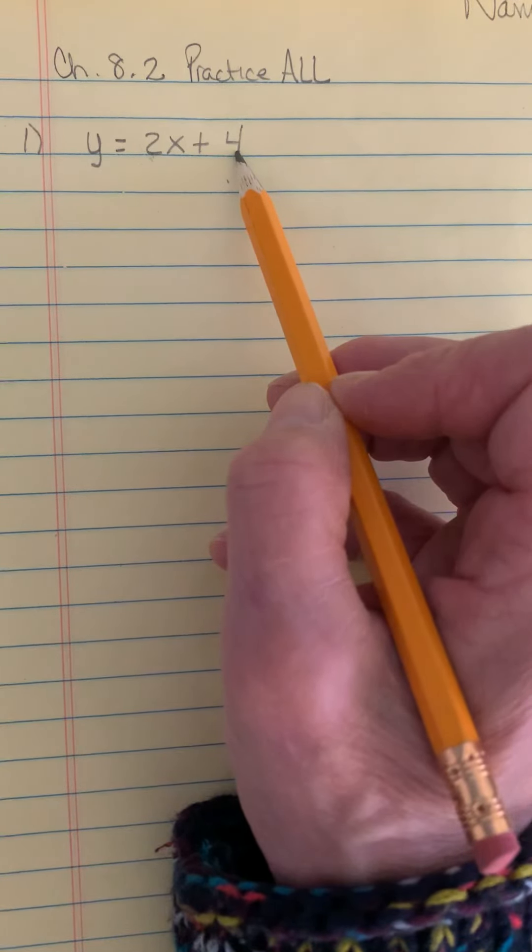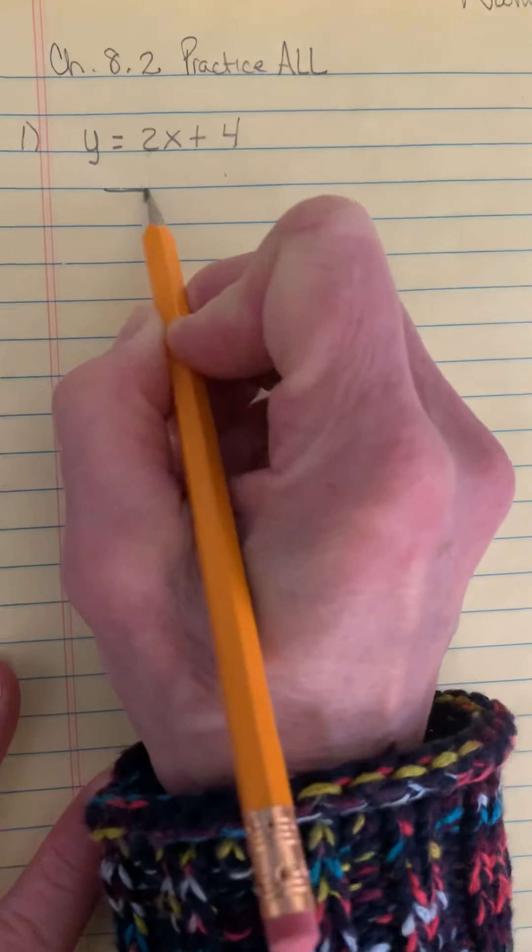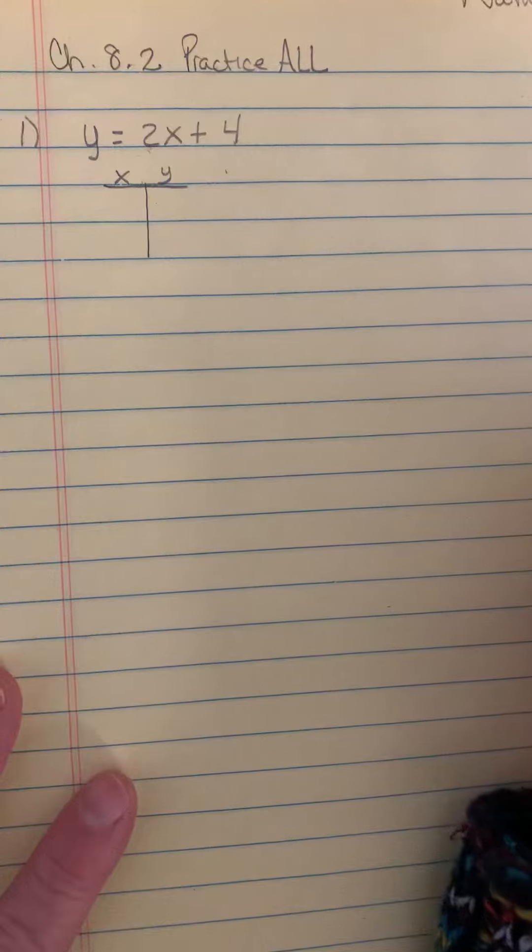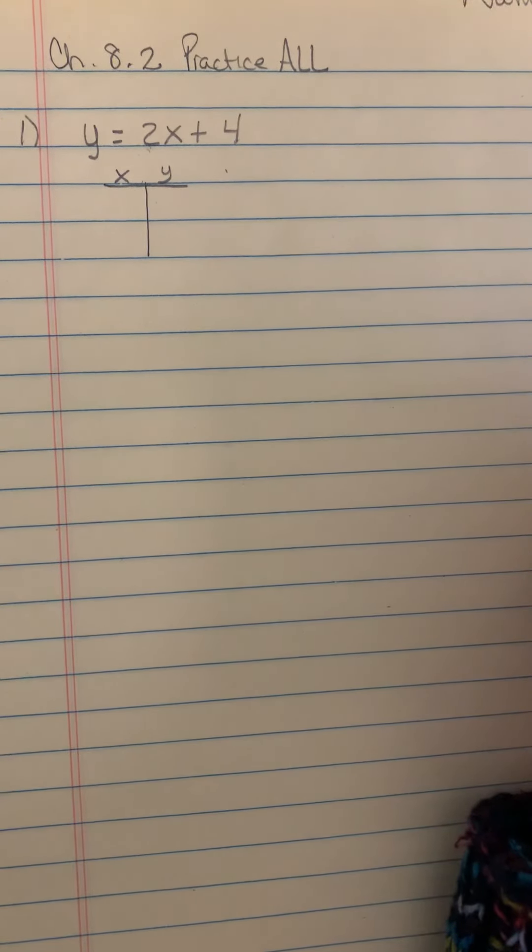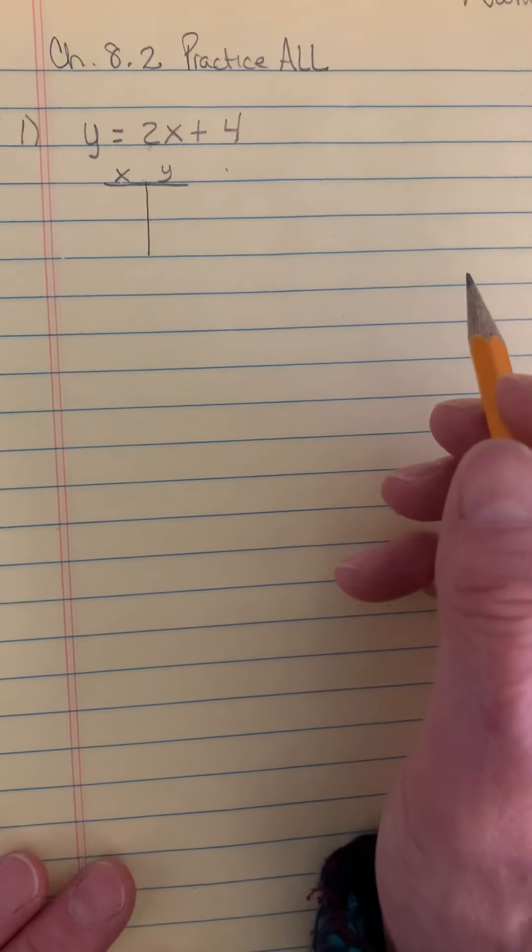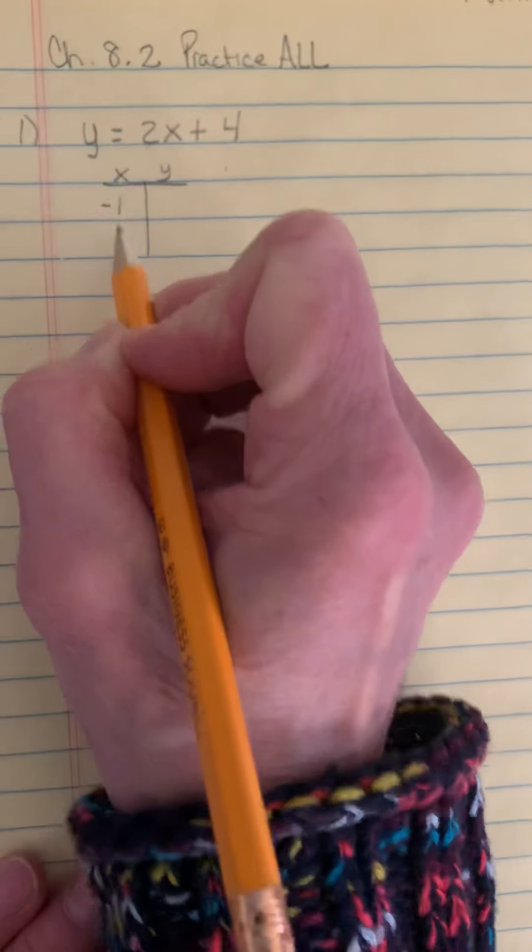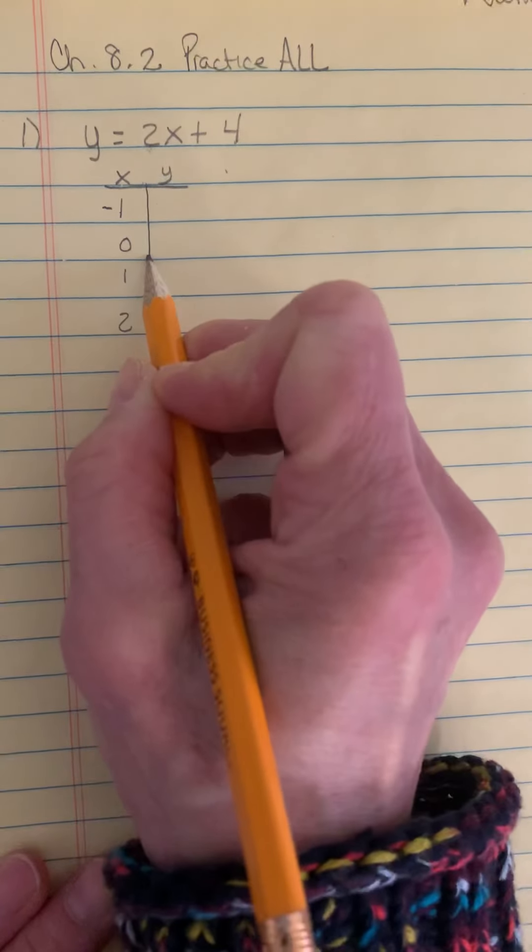So you're going to go ahead and pick four numbers to plug into this and create a table of your x and your y values. Now what x and y values can you pick? Well, basically anyone you want. But if you want to check it with mine, chances are I'm going to use the same similar numbers like negative 1, 0, 1, and 2. Okay?